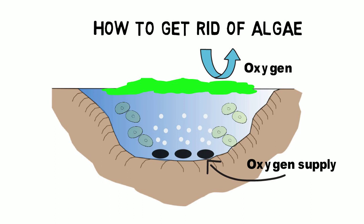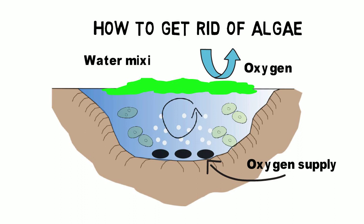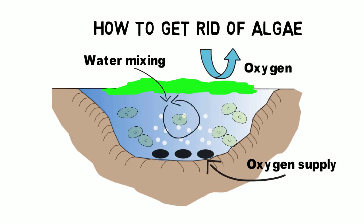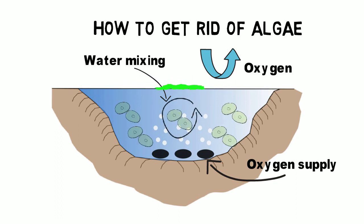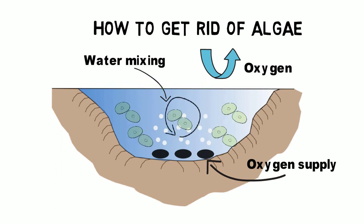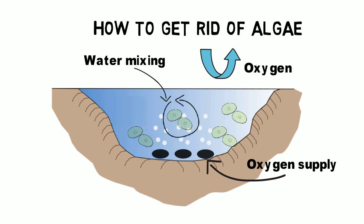At the same time, a properly designed aeration diffuser system ensures good water mixing so that the bacteria colonies can easily spread out in the whole pond. The bacteria itself is harmless for humans or sea life and will reduce its number automatically when the nutrient levels of the pond decrease.